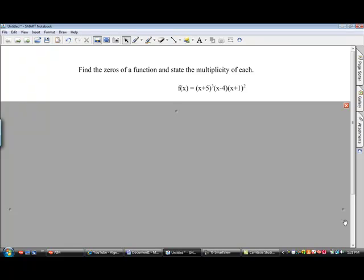When the problem has already been factored, if you want to find the zeros, you just set each individual factor equal to zero and solve. The exponents in each set indicate the multiplicity of each.